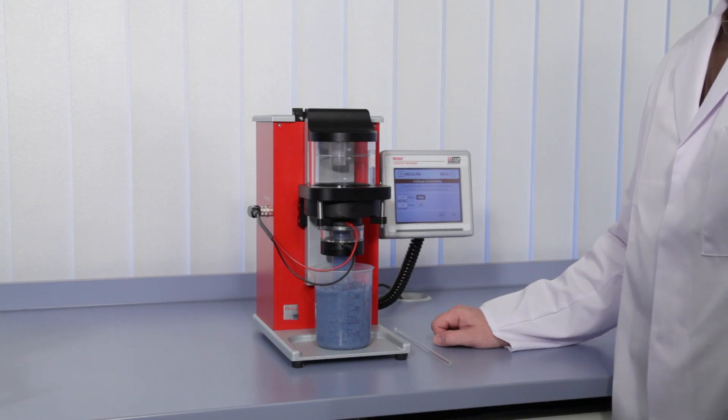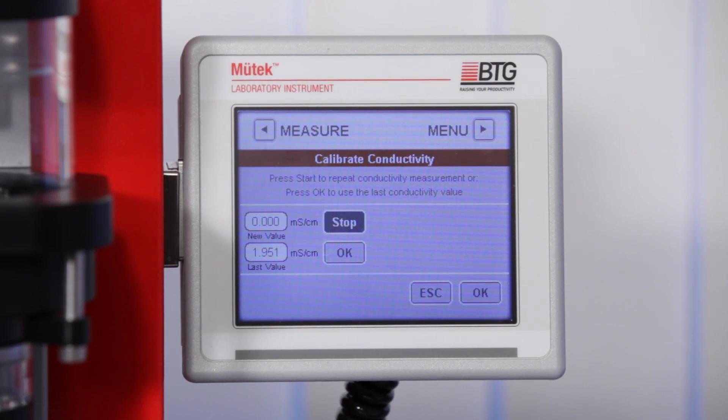It is recommended making a second measurement to confirm the first value. Alternatively, you may use the conductivity value taken from the previous zeta potential measurement, which is displayed in the field Last Value.